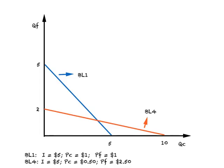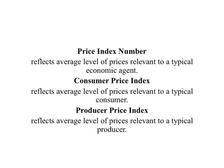This is how we make comparisons and judgments about real income between two budget lines. A question arises: how do we calculate real income in a real-world situation where we spend money on not just one or two items, but hundreds of different items? To help with this, statisticians have developed what is called a price index number — a single number reflecting the average level of prices relevant to a typical economic agent, calculated as a kind of weighted average.